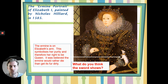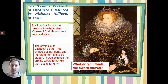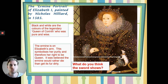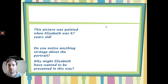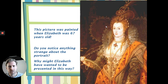So what do you also think the sword shows? The sword shows power — her leading her troops into battle. She wasn't obviously there on the boats with the Spanish Armada, but she was the one that led them to success. And the black and white colours show that she is pure and wise — she wants to be seen as a wise queen, as this is a portrait of her when she was older. Elizabeth was 67 years old when this was painted.